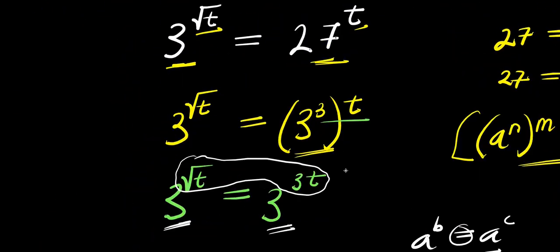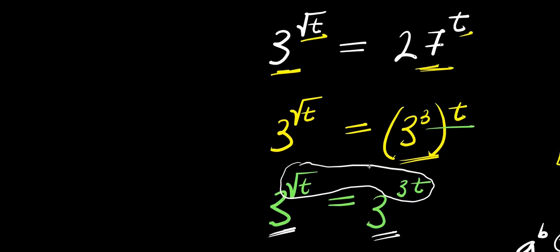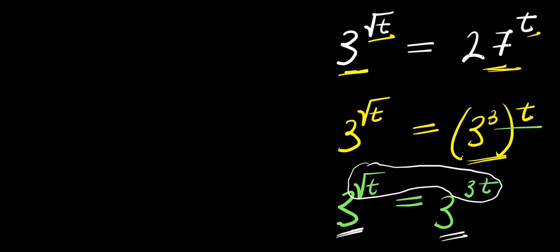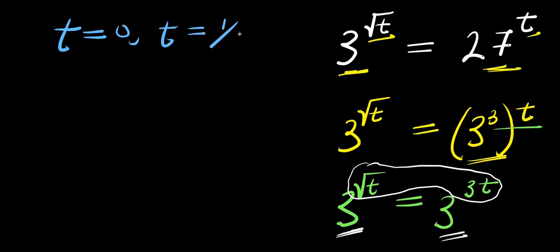So in total we are having 2 different solutions, which are t equals 0 and t equals 1 over 9. These are the 2 solutions that we have gotten so far.